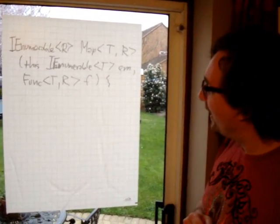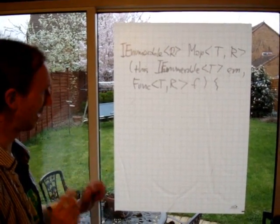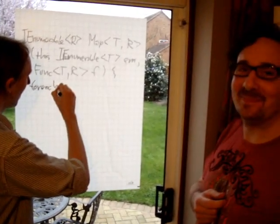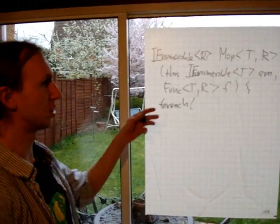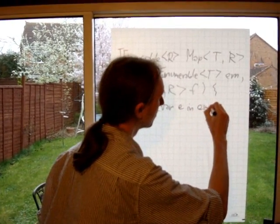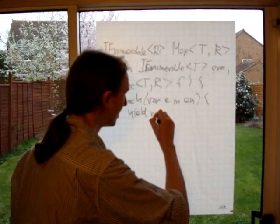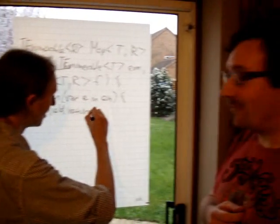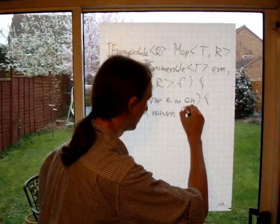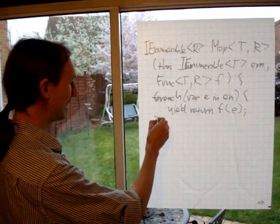I wonder if FxCop would let you get away with that. Well, let's keep it simple — no FxCop today. And to implement the function, we'll just iterate over all the input elements. It's a good job we've got type inference here at least — I don't think I could have stomached another generic declaration. It's just a very simple function, and we'll just return the result of calling the function. And that's it.